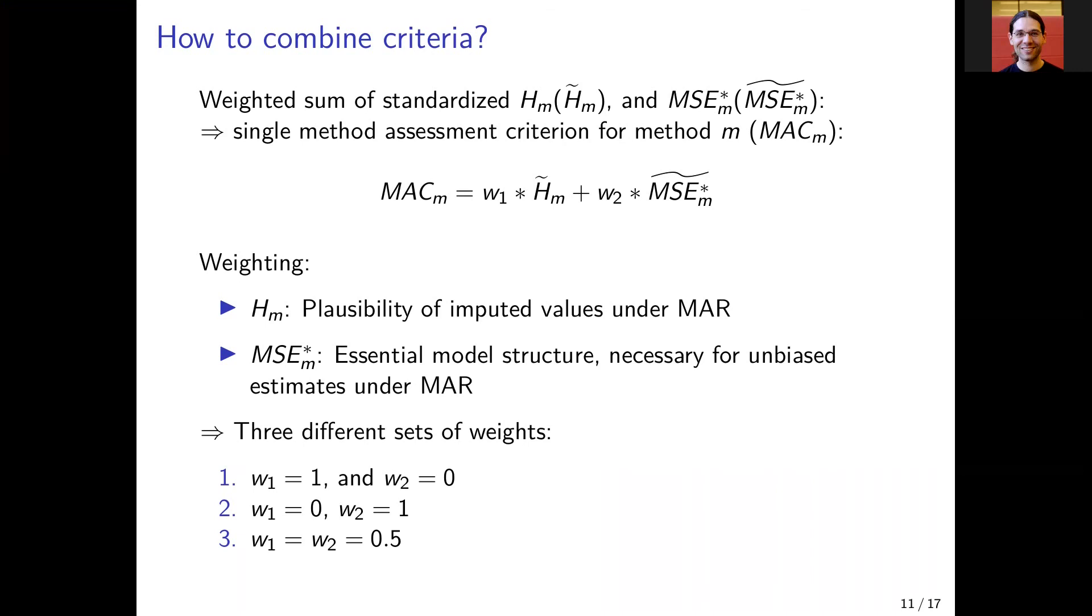Regarding the weighting, the Hellinger's distance is assessing the plausibility of the imputed values under missing at random. The MSE-star is assessing the essential model structure and also necessary for unbiased estimates under missing at random.